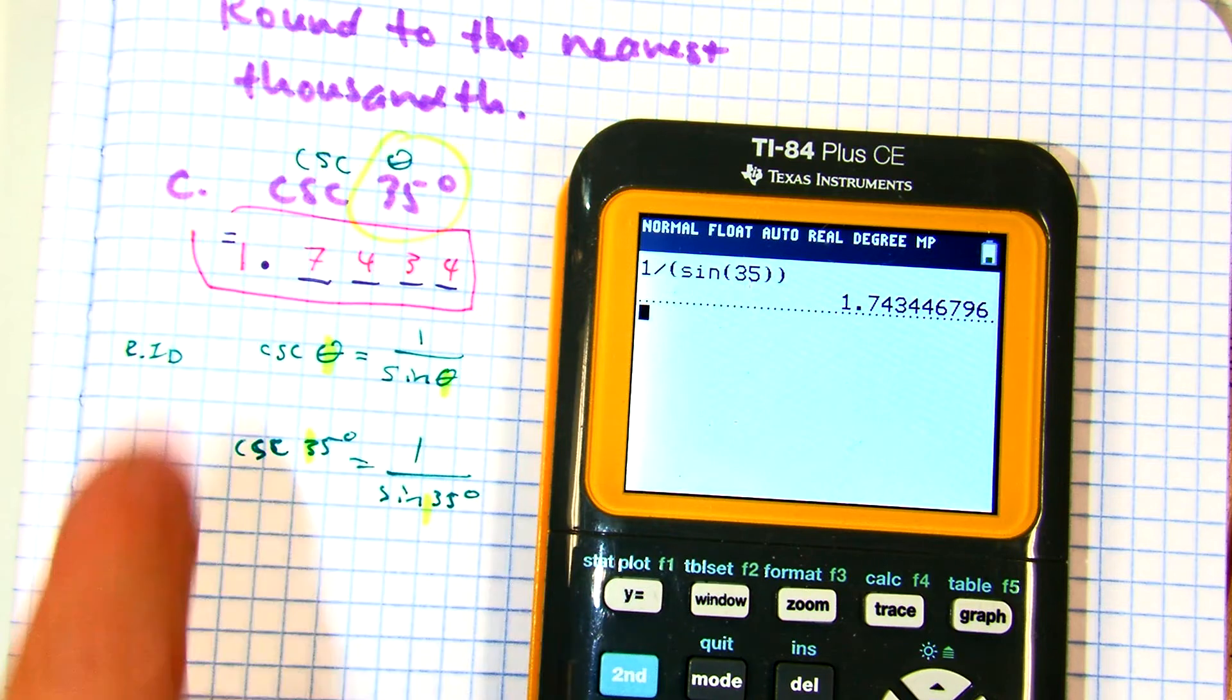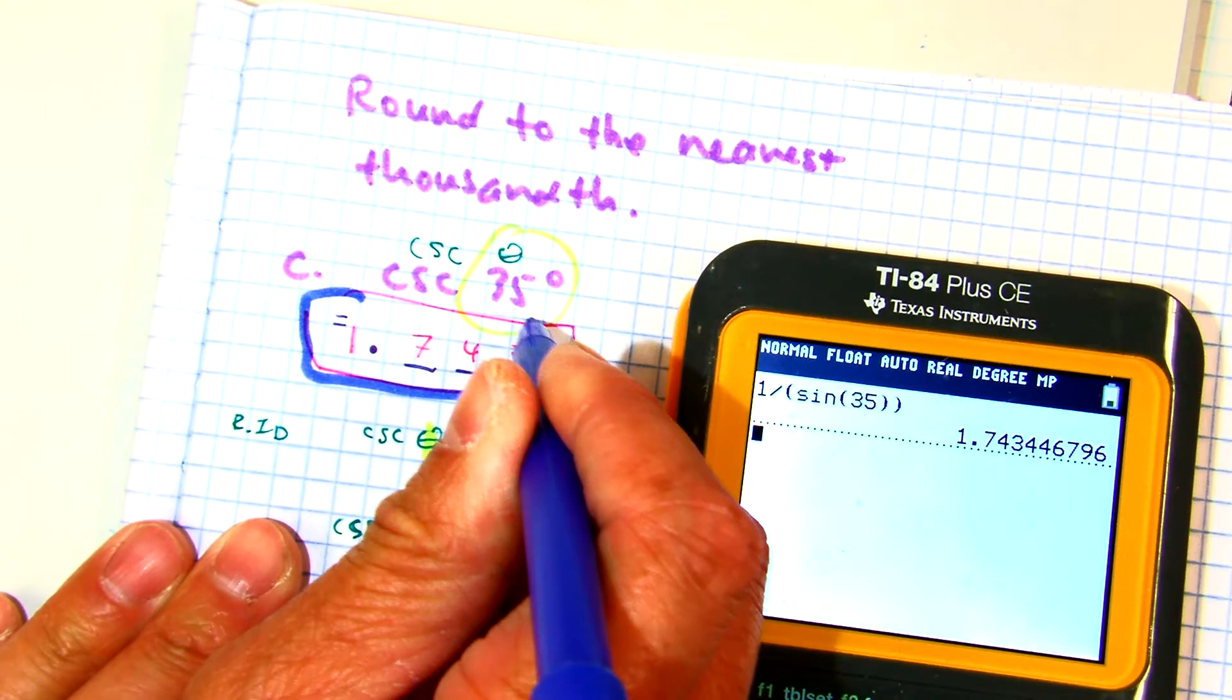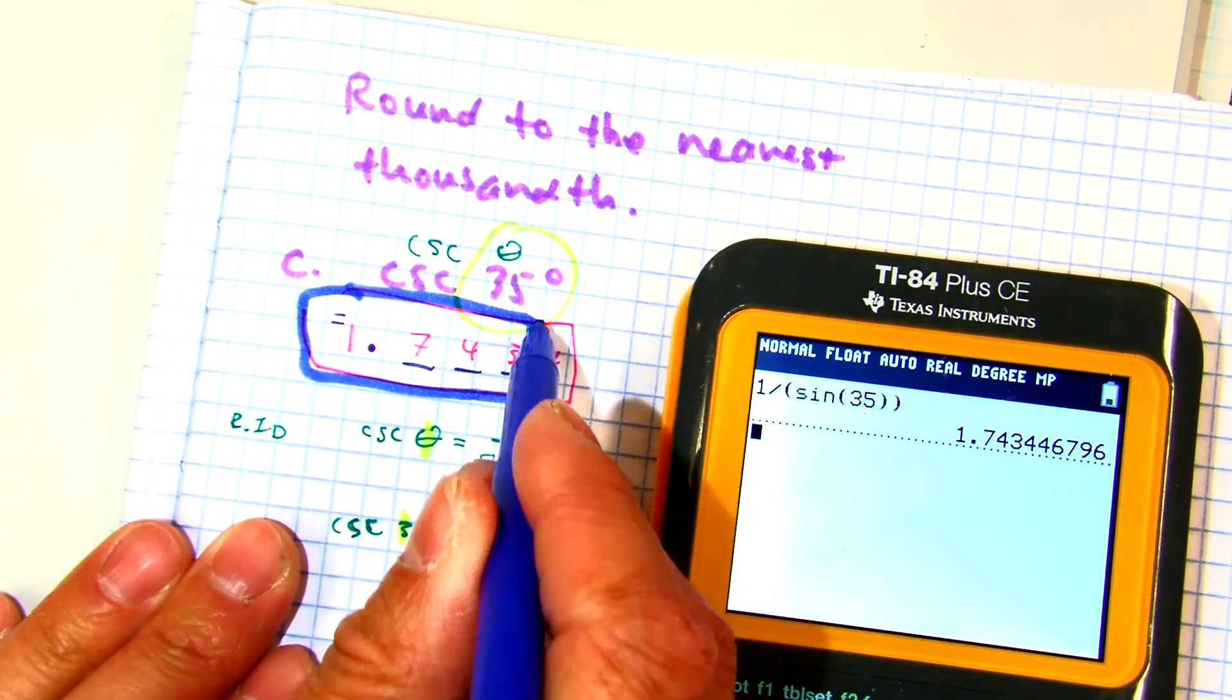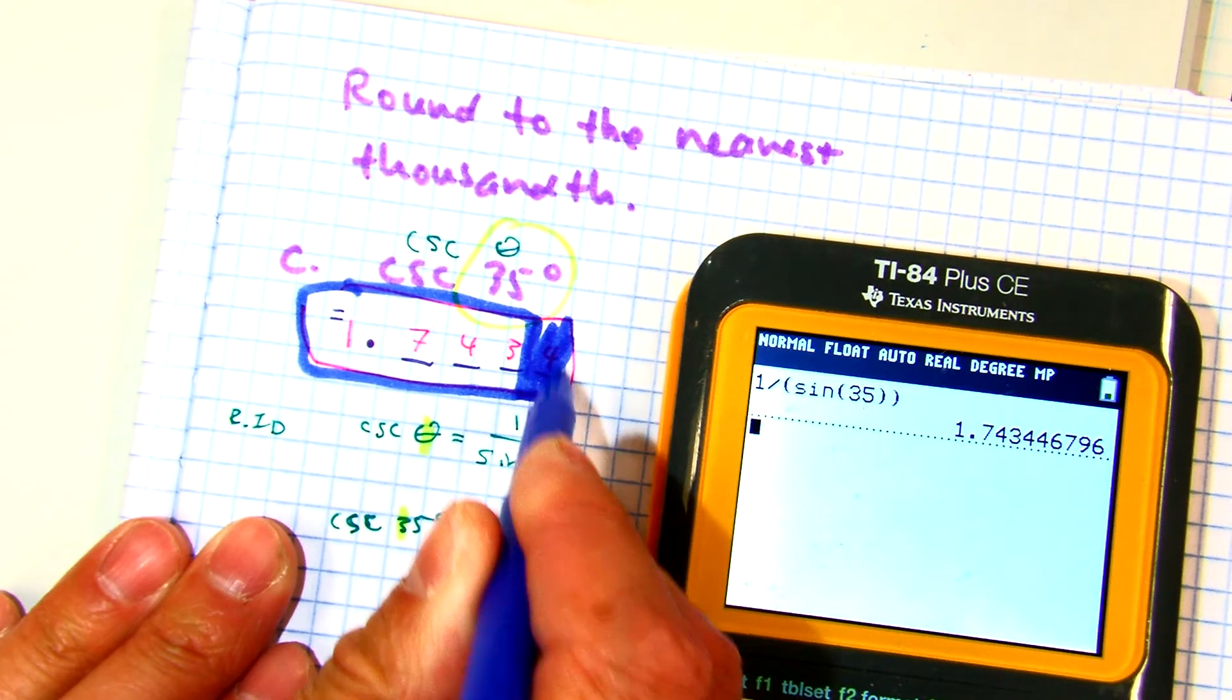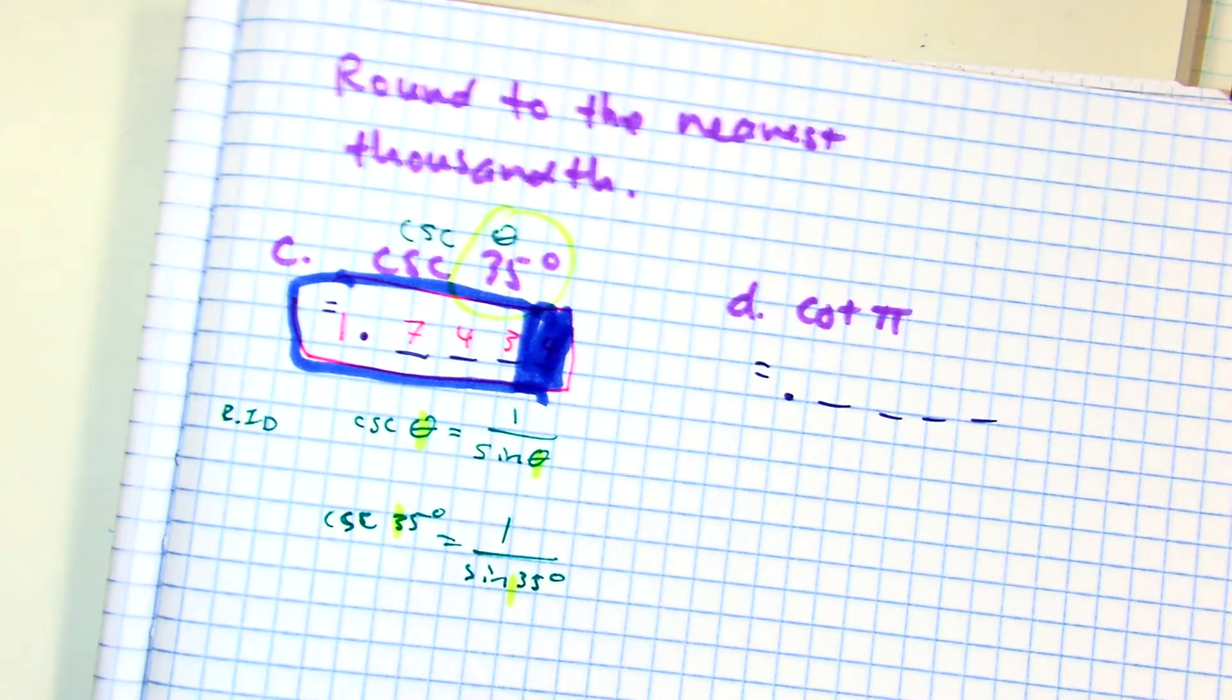Nearest thousandths. So, tenths, hundredths, thousandths. Looks good? Alright. Let's try D now.